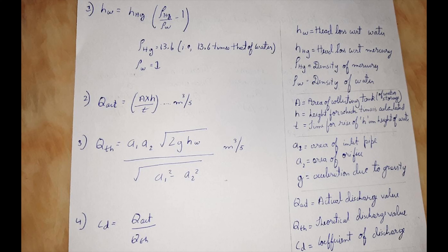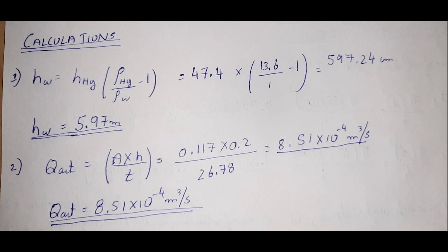g is acceleration due to gravity and hw is head loss with respect to water. Once we obtain the actual and theoretical discharges, the coefficient of discharge is calculated. The formula for coefficient of discharge cd is equal to q actual by q theoretical. By using these four formulas, the calculations are shown.